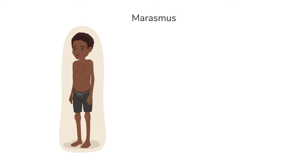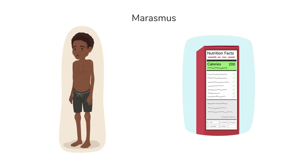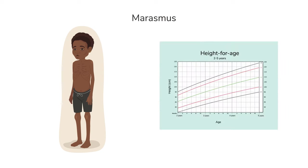Marasmus occurs when the child has not taken in enough calories and does not have the energy to keep their body working properly. To identify marasmus, look out for a child who is thin, weak and tired. They may also be short for their age due to malnutrition during their critical growth periods.